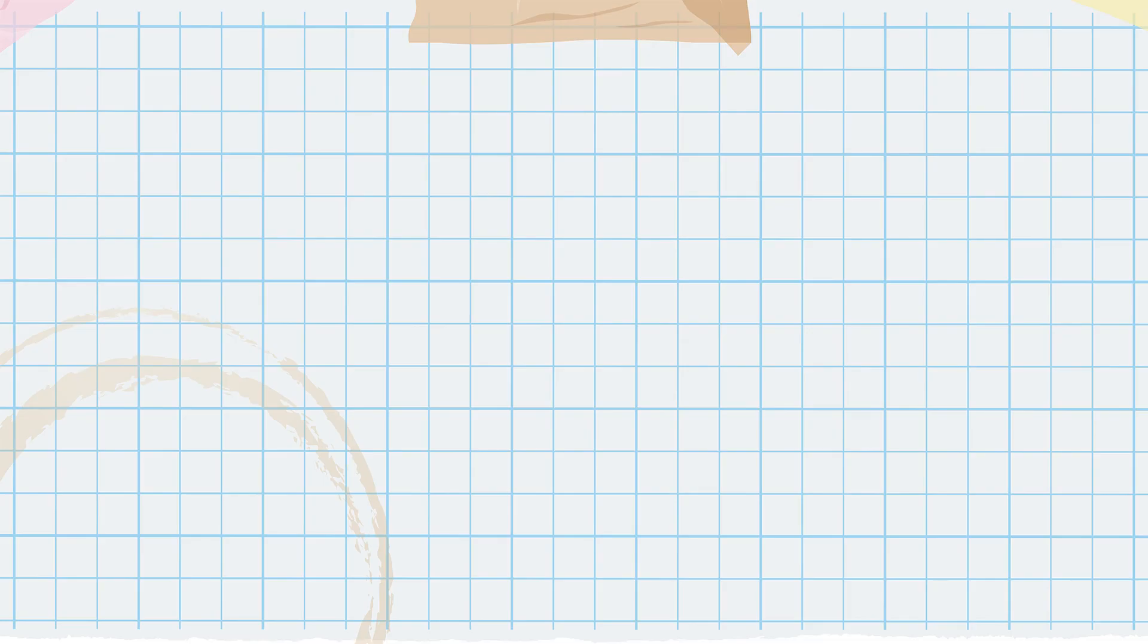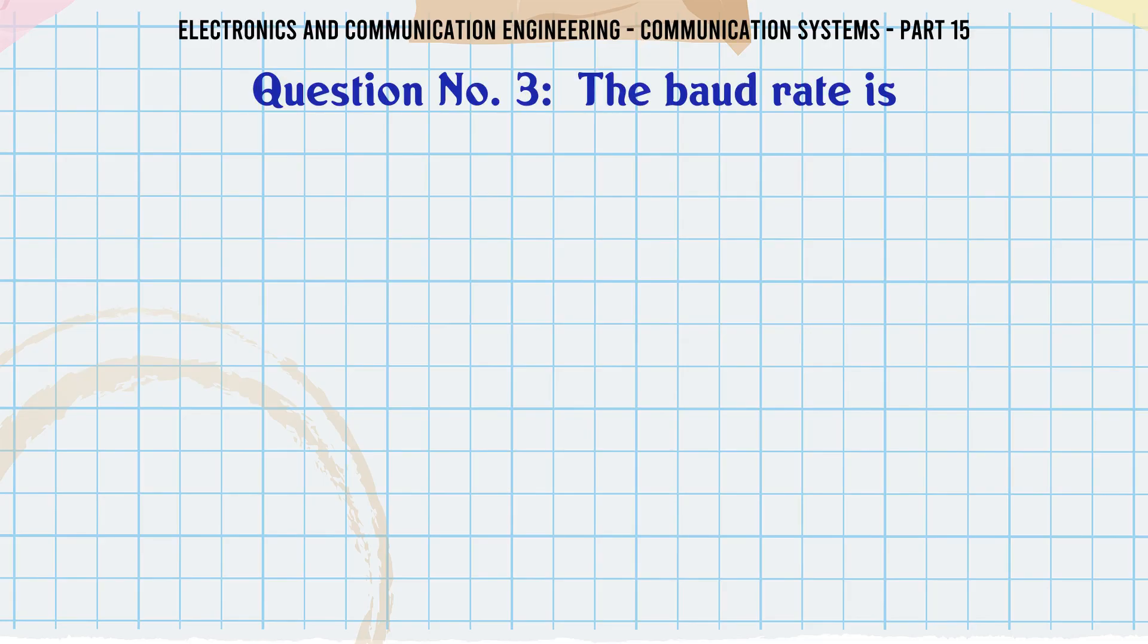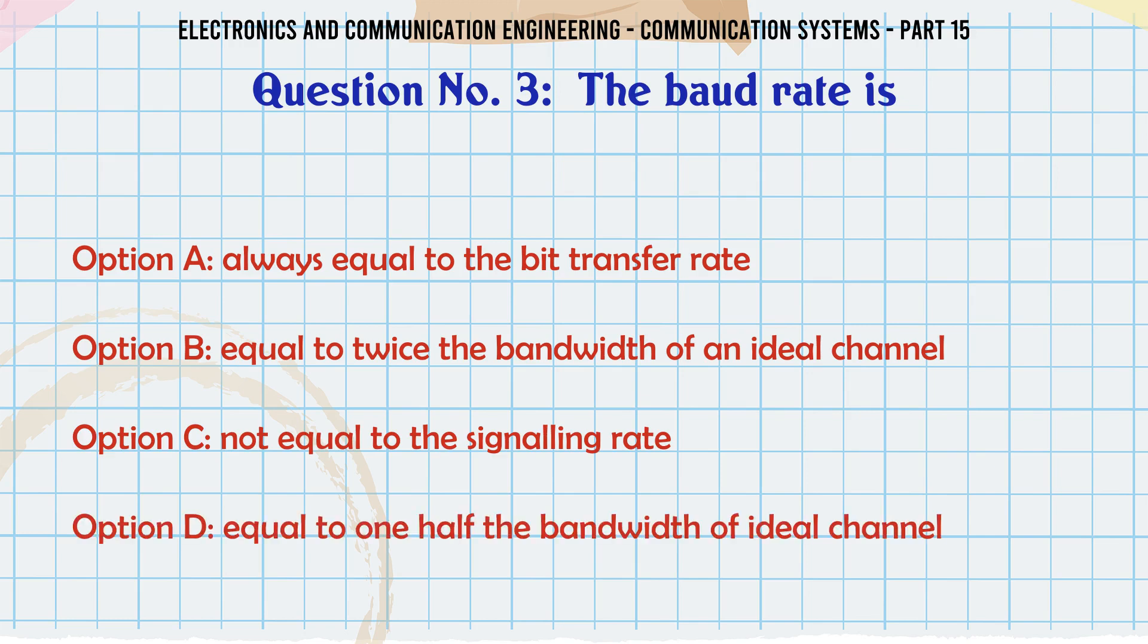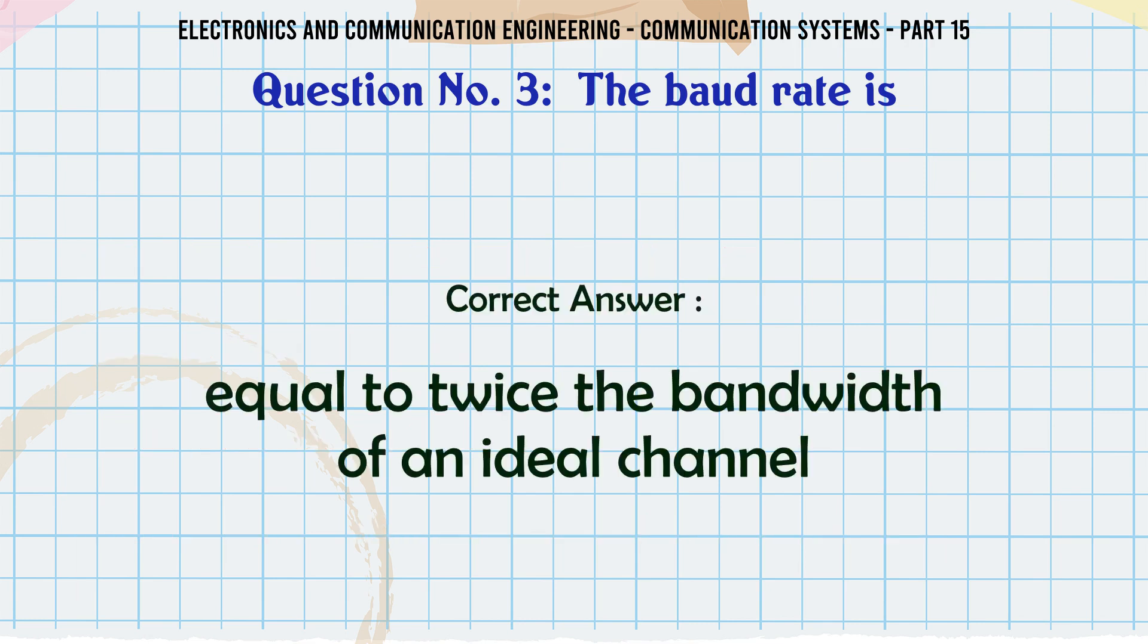The baud rate is: a always equal to the bit transfer rate, b equal to twice the bandwidth of an ideal channel, c not equal to the signaling rate, d equal to one-half the bandwidth of ideal channel. The correct answer is equal to twice the bandwidth of an ideal channel.